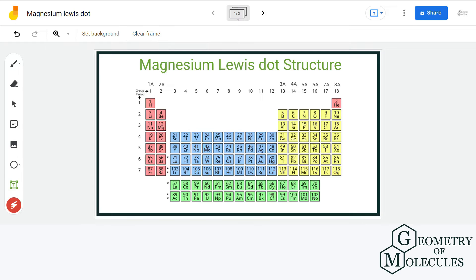To do so we must know the total number of valence electrons, which can be determined by looking at the periodic table.